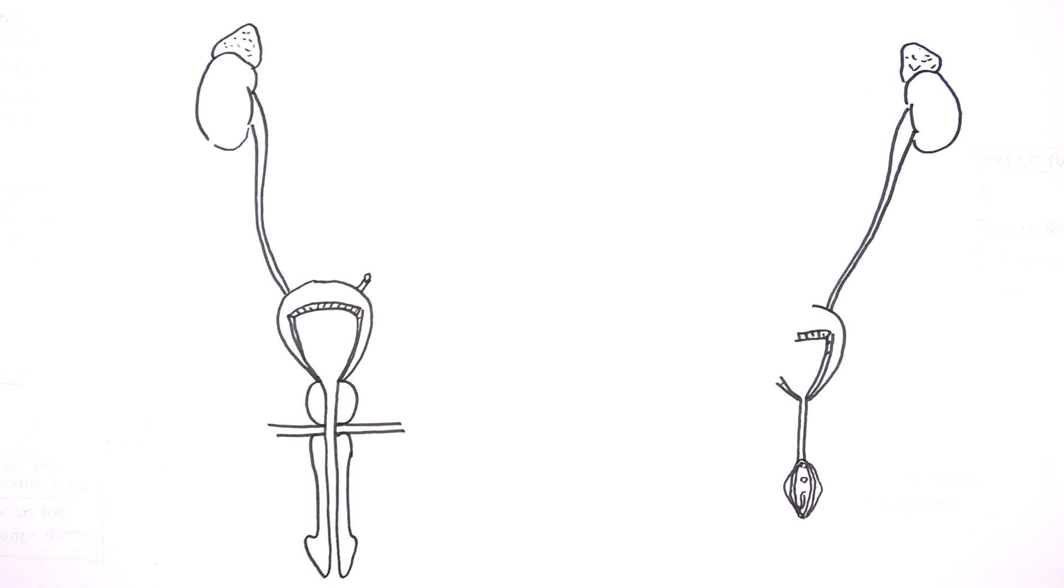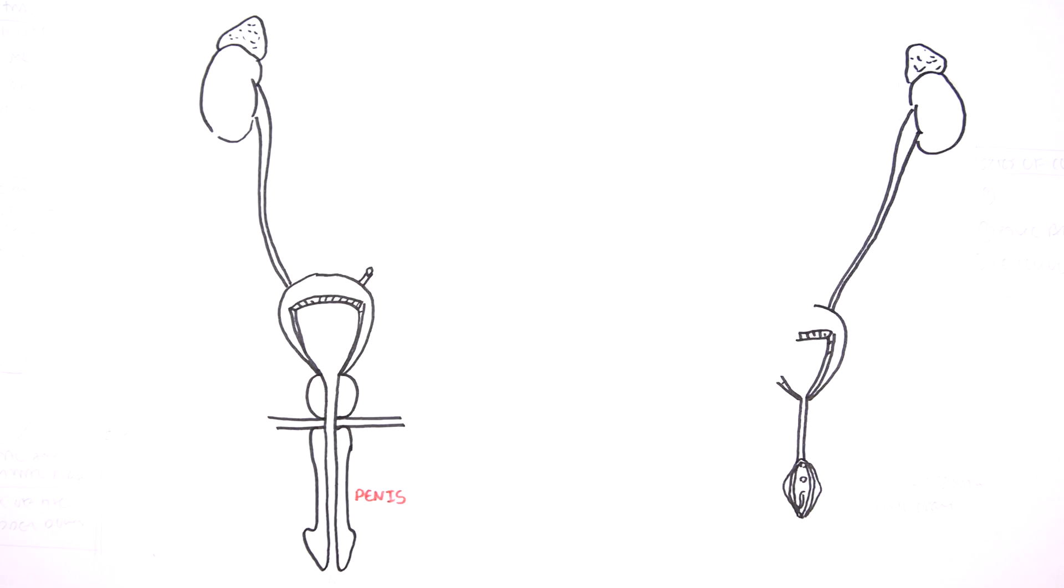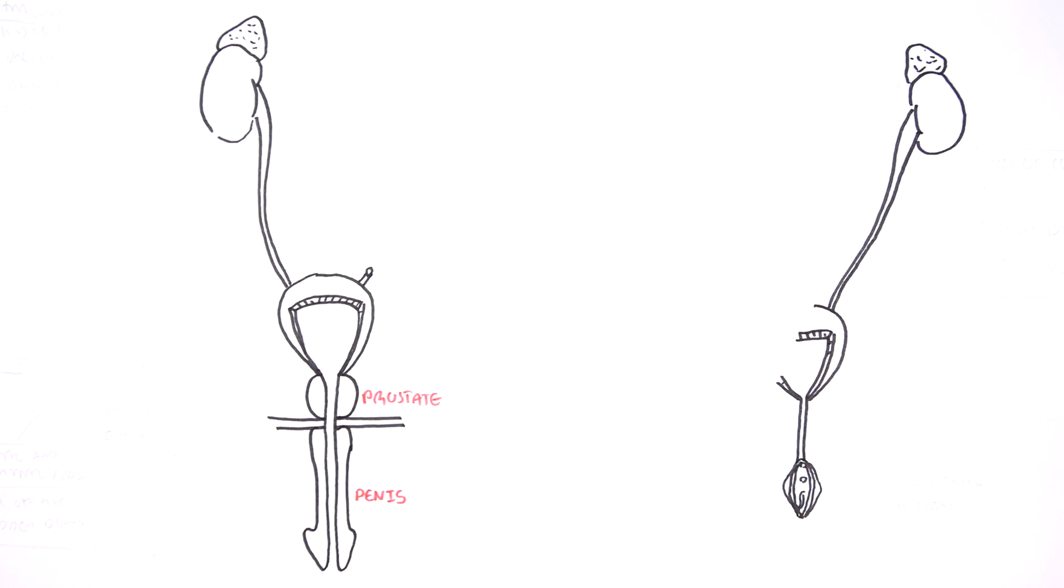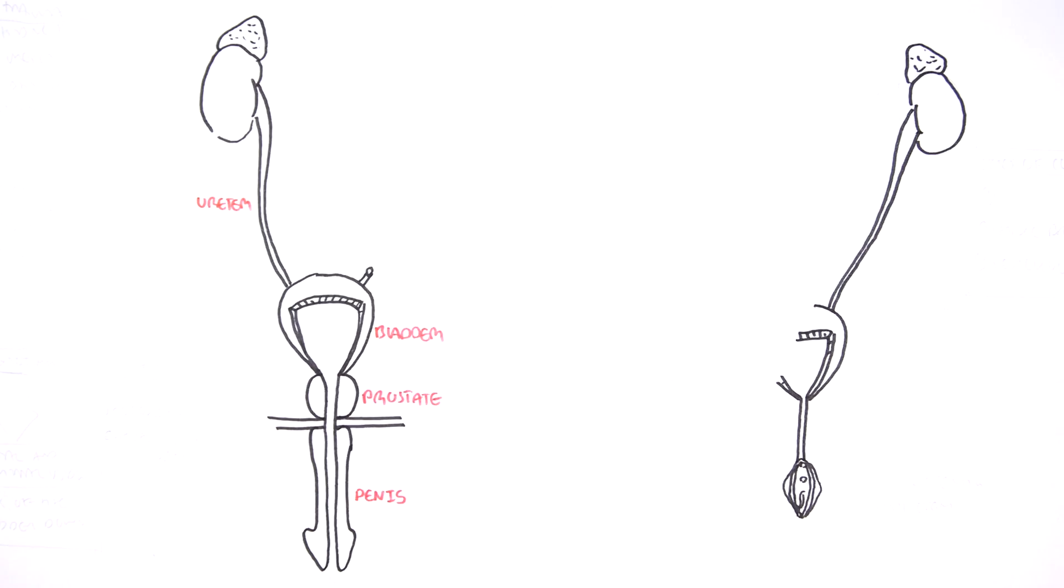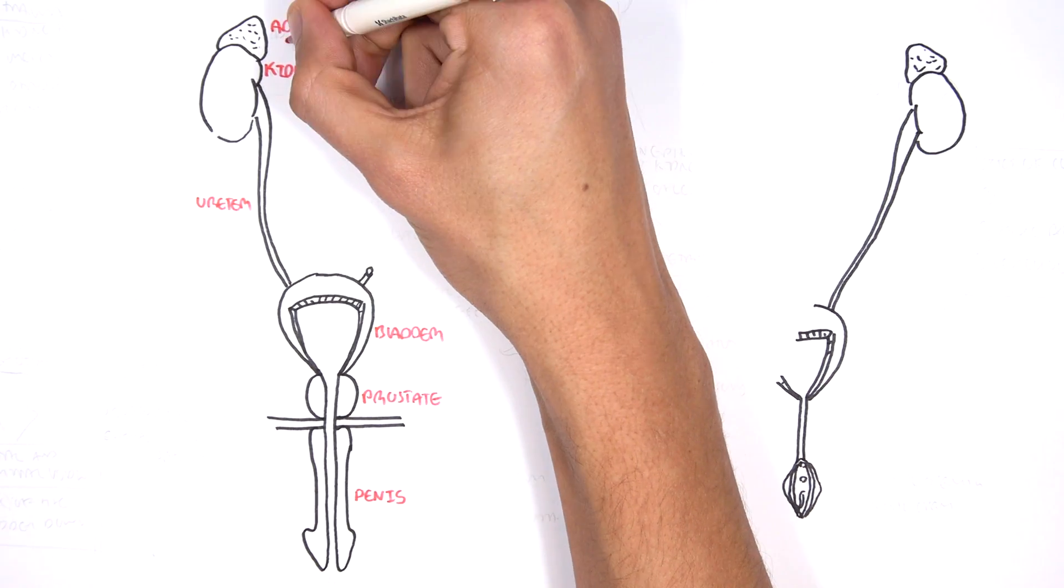So here is the male and here is the female. In the male, we have the penis, the prostate, the bladder, ureter, the kidneys, and the adrenal glands.